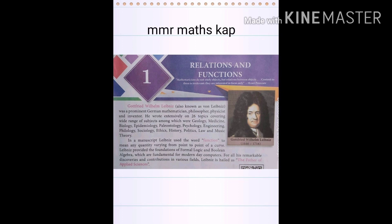Before we start learning about relations and functions in class 10, we introduce a great mathematician Gottfried Wilhelm Leibniz, also known as von Leibniz. He wrote extensively on 26 topics covering biology, psychology, engineering, sociology, ethics, history, law, and music theory. Leibniz is held as the father of applied sciences.